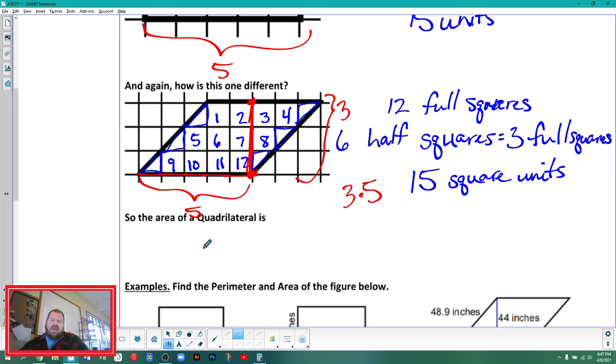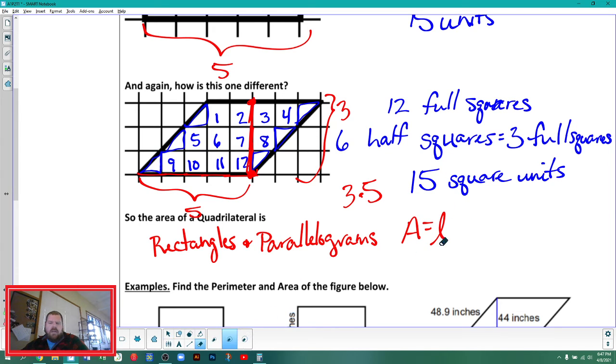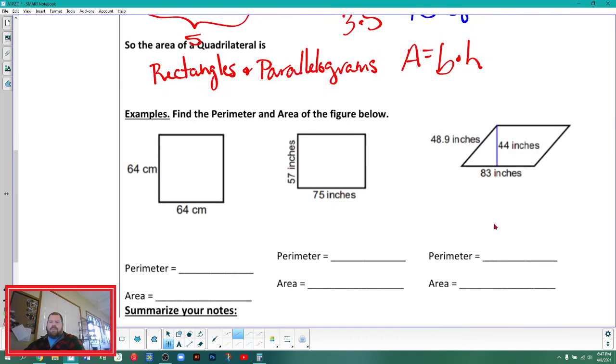The area of a quadrilateral, and we are talking more about rectangles and our other one here is a parallelogram - so for rectangles and parallelograms, the area is base times the height. Let's find the perimeter and the area of these three, and then we'll call it good.